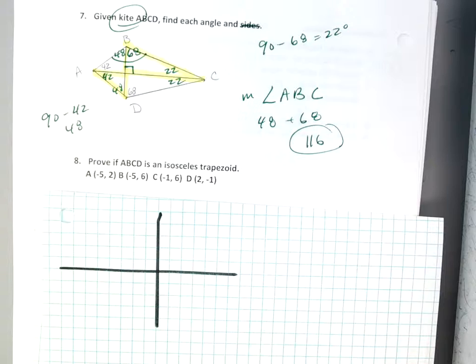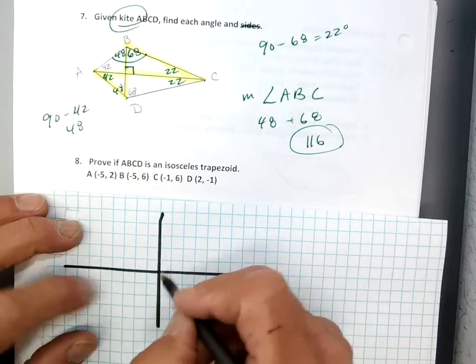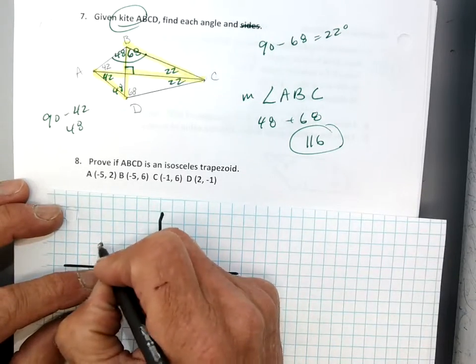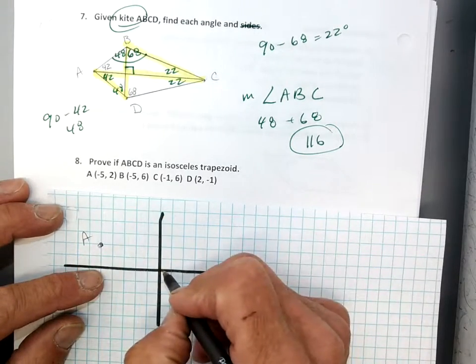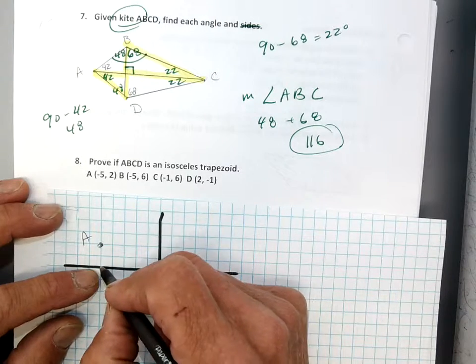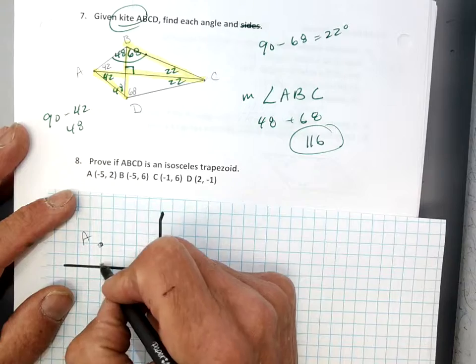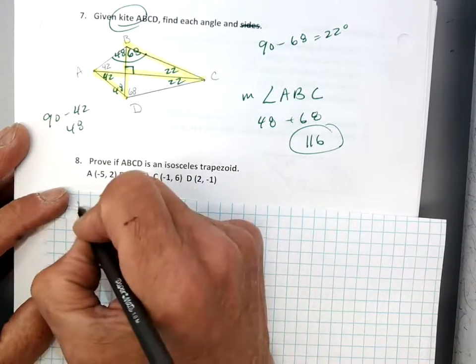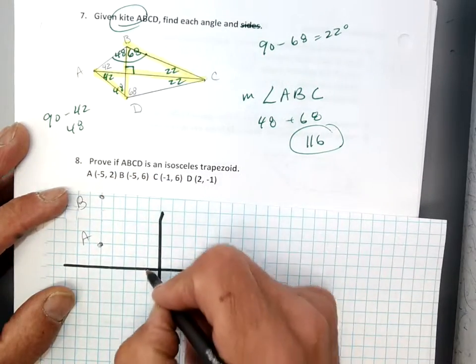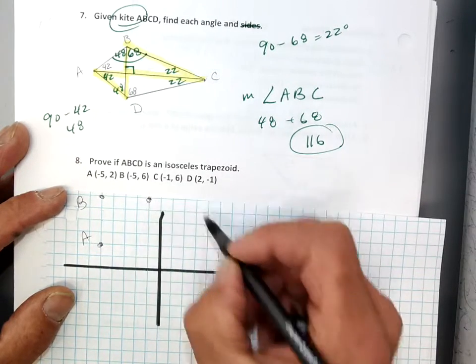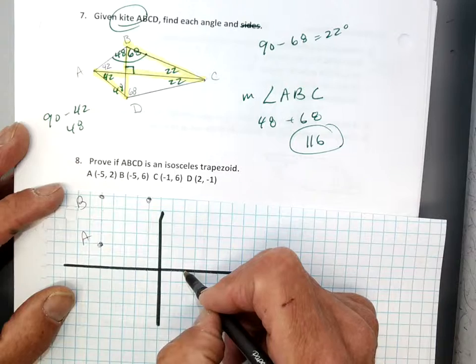All right, so I'm going to have negative 5, 1, 2, 3, 4, 5, 2 is A. Negative 6, 1, 2, 3, 4, 5, and then 6 is 1, 2, 3, 4, 5, 6. There's B. This is such a weird looking trapezoid. Negative 1, 6, and then 2, negative 1. Okay.